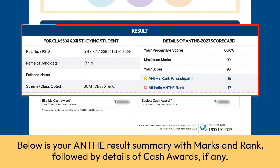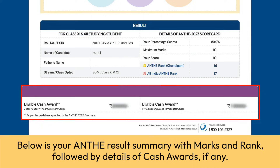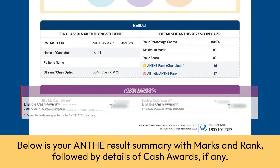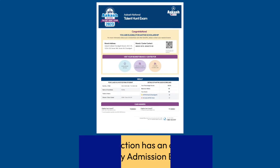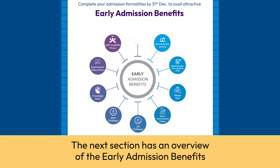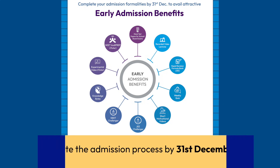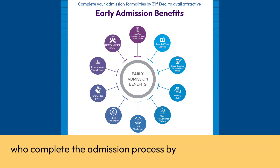Visit the branch for scholarship details, early admission benefits, and academic counseling. Below is your ANTHE results summary with marks and rank, followed by details of cash awards if any. The next section has an overview of the early admission benefits.